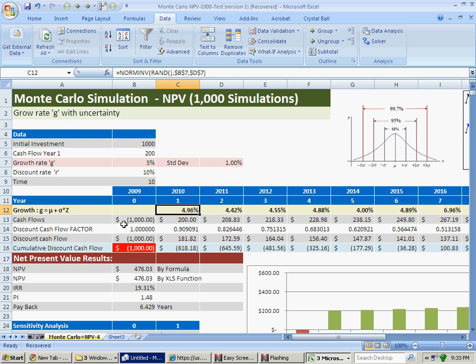As you can see, for example, for 2010, I have 4.96, for 2011, 4.42, for 2012, 4.55. So this is what we are trying to simulate.